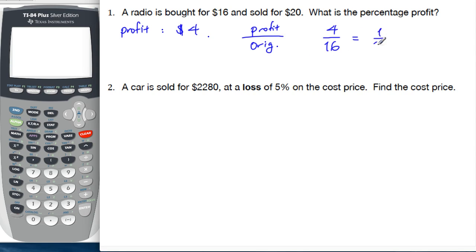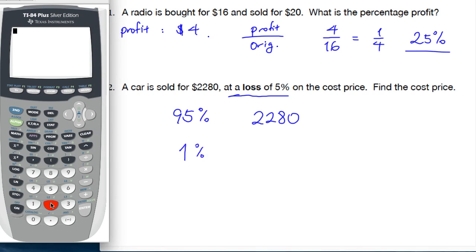In number two, we have a car sold for $2,280. Now read carefully, at a loss of 5% on the cost price. Find the cost price. So what does that tell us? It tells us that $2,280 is 95%. Okay, so the loss of 5% tells us that 95% was $2,280. We want the original, so we always back up to find 1%. This, definitely be given a calculator for numbers like this. This is pretty nasty without.